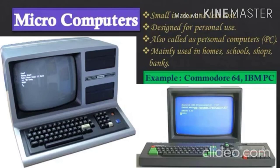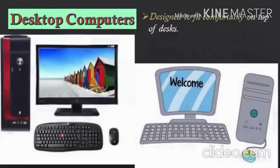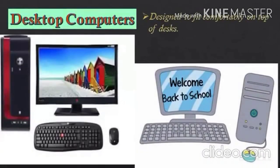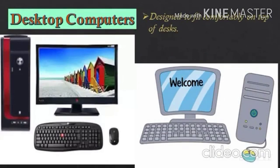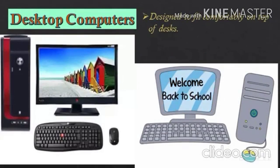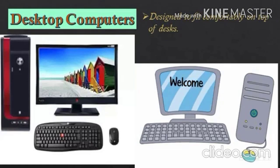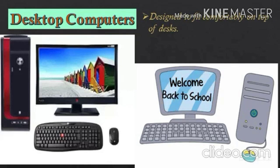These computers are given different names according to their uses, for example Commodore 64, IBM PC, and desktop computer. These computers are designed to fit comfortably on top of desks. Desktop computers typically come in several units such as monitor, CPU, keyboard, and mouse, which are connected to each other and work like a single unit.